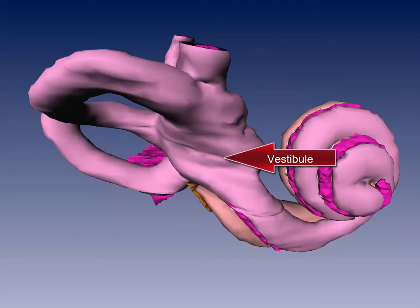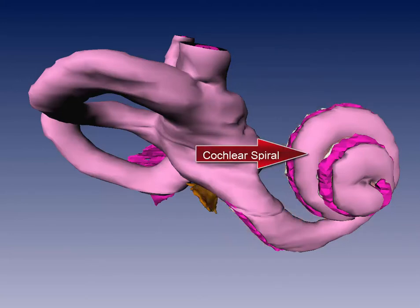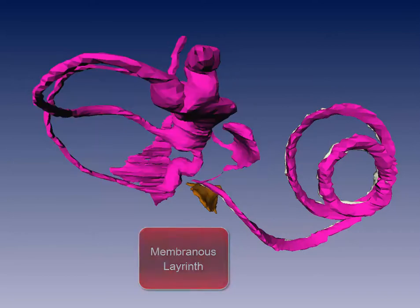As well as the vestibule and the cochlear spiral. We now see the membranous labyrinth itself with its cochlear duct.